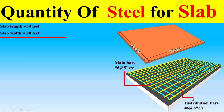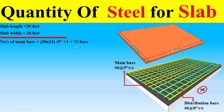Dear students, to find the number of main bars, we first multiply the 30-foot span by 12 to convert it into inches, then divide the total length by the 5-inch center-to-center spacing. After adding one, the total number of main bars comes out to 73.